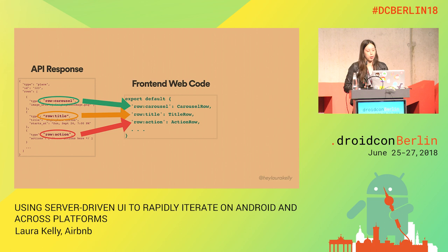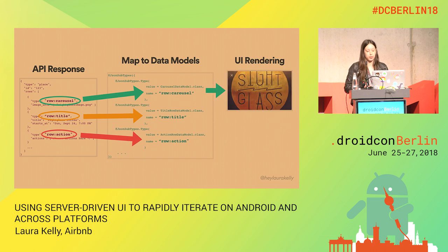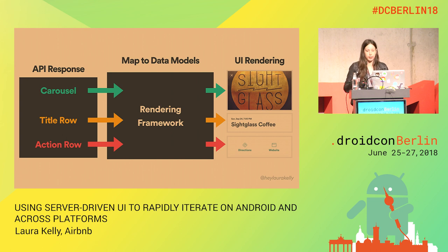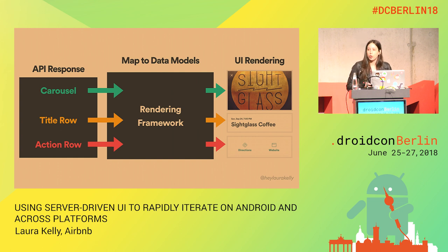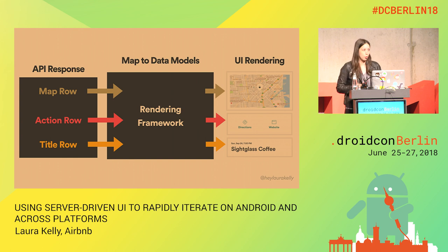Very similarly in our front-end web code, we have a mapping that's pretty much the same thing. Once the client maps that into these polymorphic data models, the rendering layer on the client will then take those data models and parse them into actual rendered components. On a high level, how it works on Android, iOS, and web is: we send this API response with a list of components, they get mapped to data models, and then they're rendered into components. So suppose we change our mind on the screen — suppose we want to put a map in that first component instead of that photo. All we do is make a simple back-end change, and then that map row will now be showing up on iOS, Android, and web just by that one change on the back-end. And similarly, we can change the ordering of things as well.